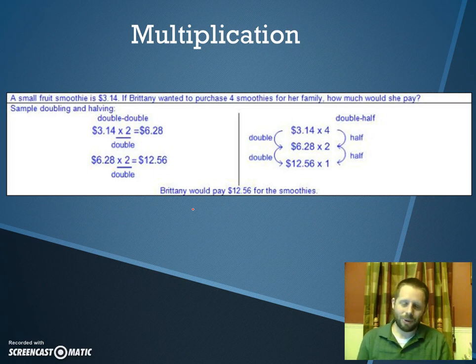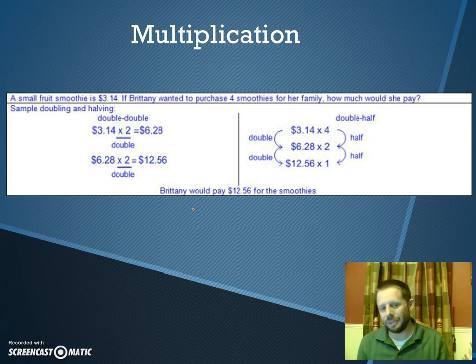If she wanted to purchase eight smoothies, I could double the $12.56 because that's the cost of four of them, right? So I could double that to find what eight of them is. Doubling tricks work really well when you're multiplying by multiples of two, like two, four, eight, 16, things like that. You can use the doubling method.